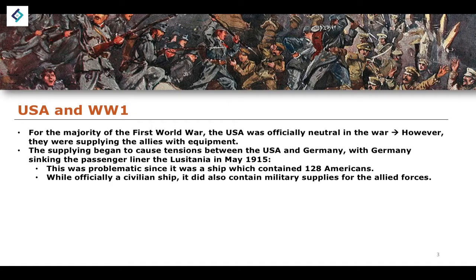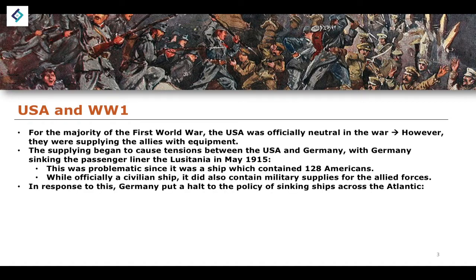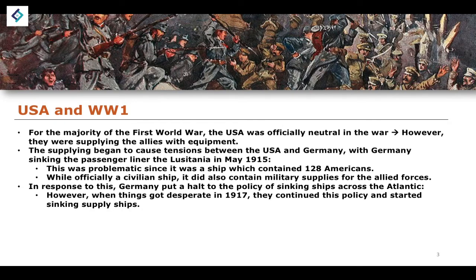While the Lusitania was officially a civilian ship, it did also contain military supplies for armed forces, making it something of a grey area. In response, Germany put a halt to the policy of sinking ships across the Atlantic, by order of the Kaiser. Then, when things got desperate in 1917, they continued this policy and started sinking supply ships again in order to try and alleviate the blockade that existed against imports into Germany.